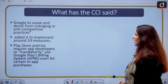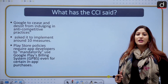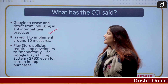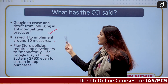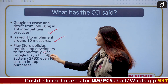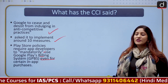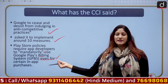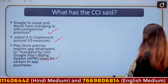Moving ahead, let us talk about what the CCI has said. Apart from putting penalties on Google, CCI is also saying that Google has to cease and desist from indulging in anti-competitive practices, and it has asked Google to implement 10 measures. Play Store policies require app developers to mandatorily use Google Play's billing system for in-app purchases, and this too should be improved according to the CCI.